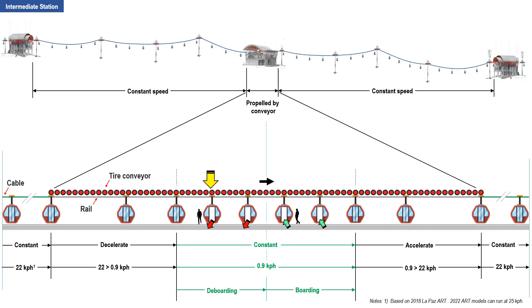At this point, the door starts to open. Passengers can deboard or stay in the cabin. Afterwards, passengers waiting on the platform can board each of the cabins that passes by. The door is then closed. The conveyor accelerates the cabin from 0.9 kph to 22 kph. The cabin grip attaches to the cable and instantaneously takes over the propulsion of the cabin. The cabin then travels at a constant speed of 22 kph until it reaches the next station. The cycle is then repeated.